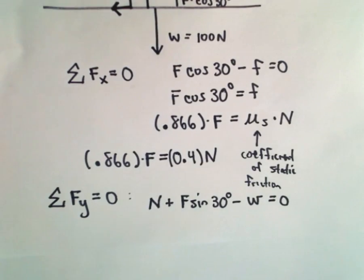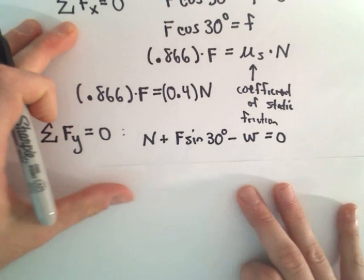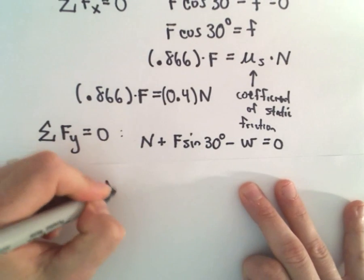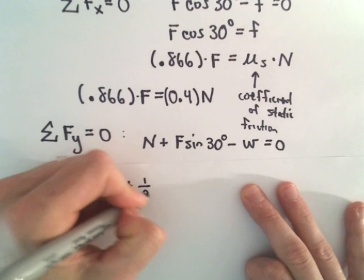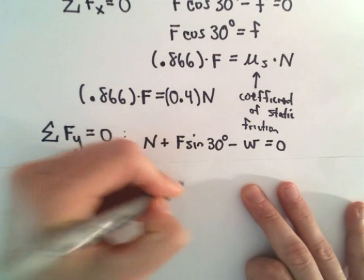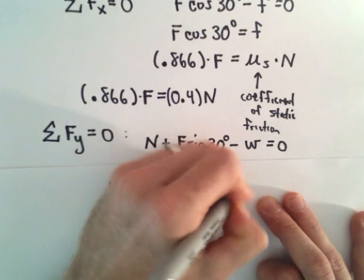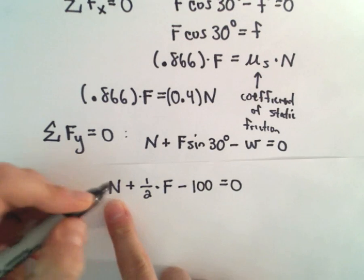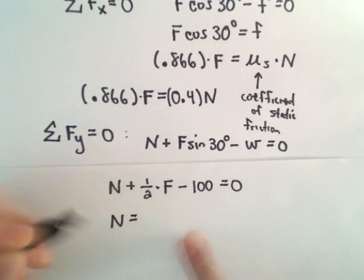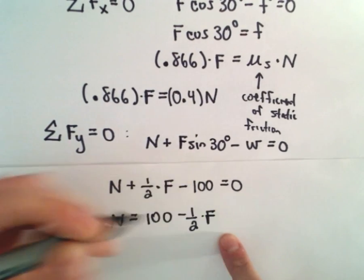So we can substitute in at least a couple things here. So we have N plus, well sine of 30 degrees is simply 1 half, so we'll have 1 half times F. We know the weight of the object, that's 100 newtons, so that equals 0. And what I did was I just simply solved for N. So, well, we can add 100 over, we'll subtract 1 half times F.